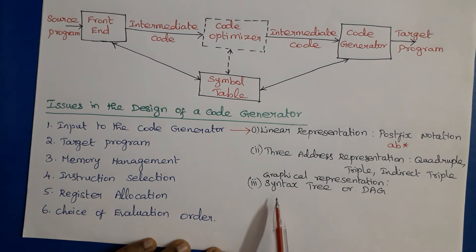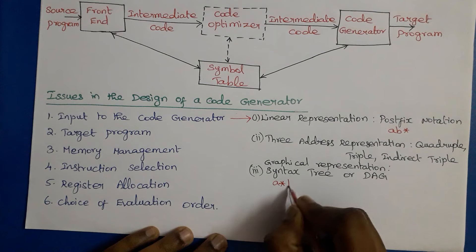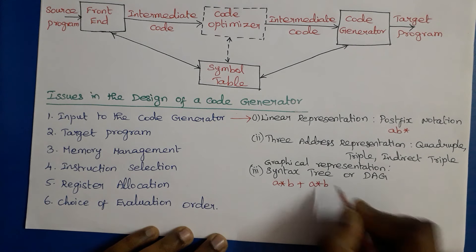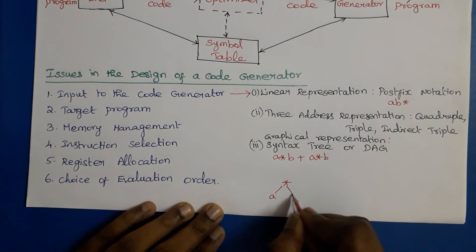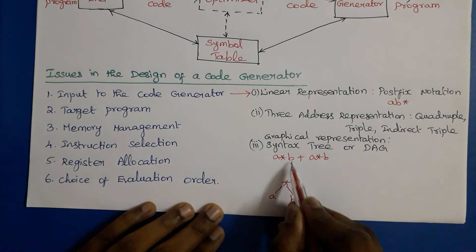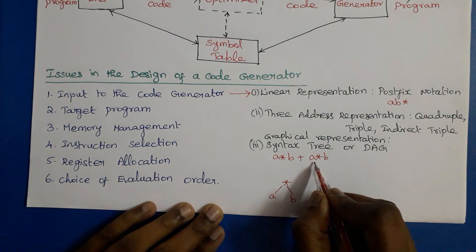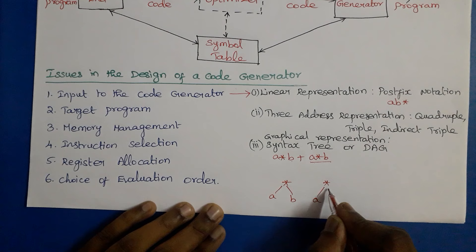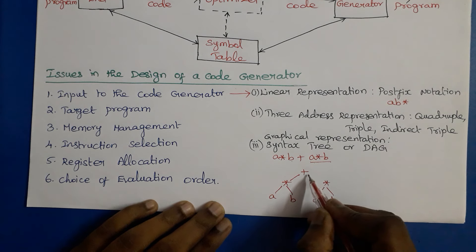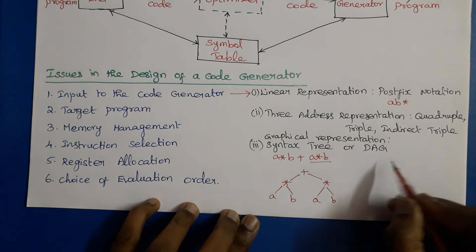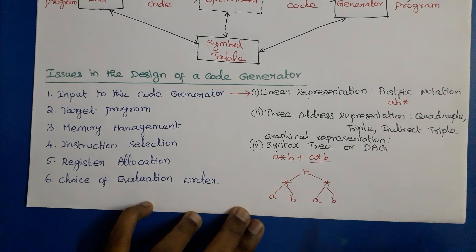The intermediate representation may also be a graphical representation such as a syntax tree or graph. For a syntax tree, interior nodes represent operators and leaves represent operands. For example, for 'a * b + a * b', we first evaluate 'a * b' where '*' is the root, 'a' is the left child, and 'b' is the right child. Then the plus expression has '+' as root with the left subtree and right subtree being the two 'a * b' subexpressions.